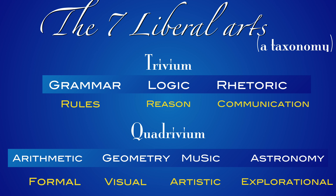One of the earliest classification attempts for art and science are the seven liberal arts. They are split into a trivium and quadrivium. I think it's also a great taxonomy for pedagogy and teaching. Grammar can be paired with the rules — axioms or algorithms in mathematics. There is logic, the process of reasoning and combining rules, and there is the process of communicating the argument in a proof or computation. For the quadrivium, we can see it as an allegory for formal, visual, artistic, or explorational approaches. Arithmetic is more formal, geometry is more visual, music is more artistic, and astronomy more explorational.